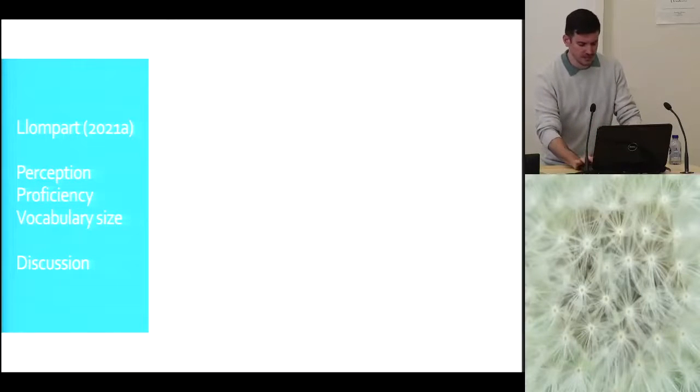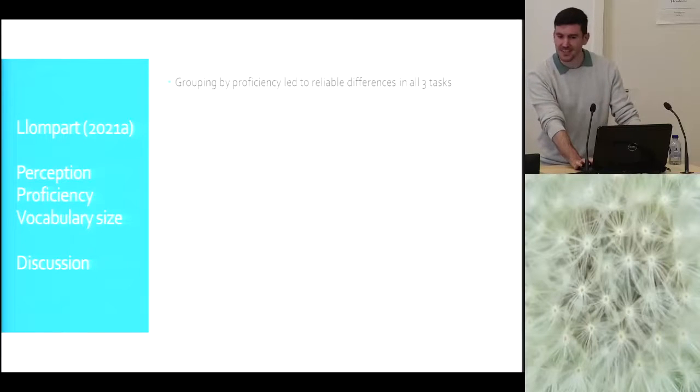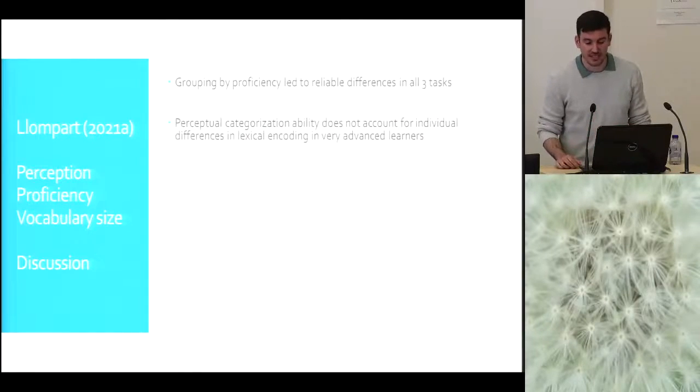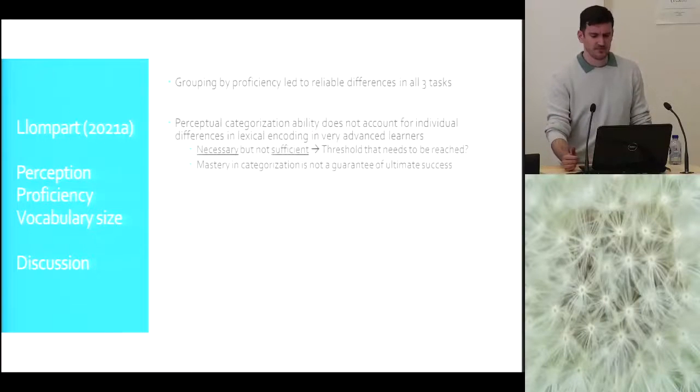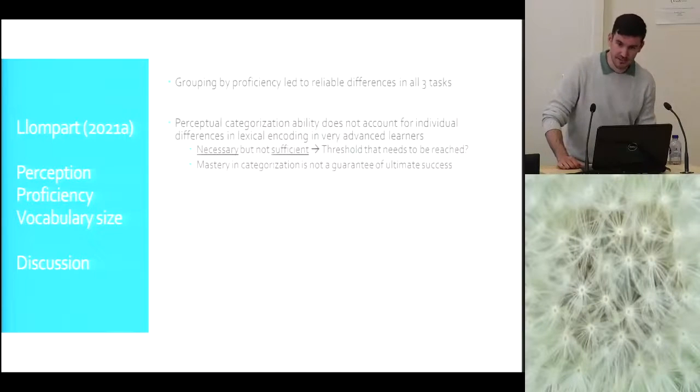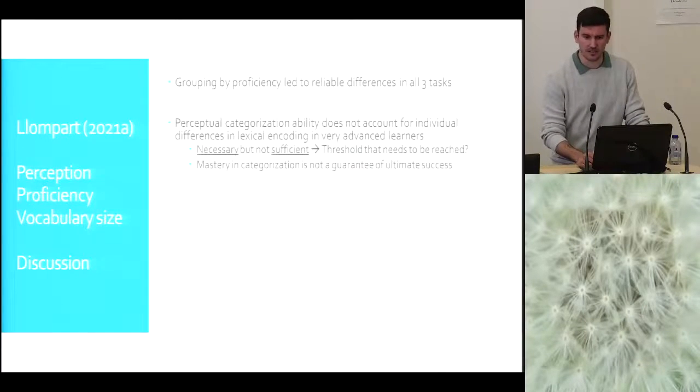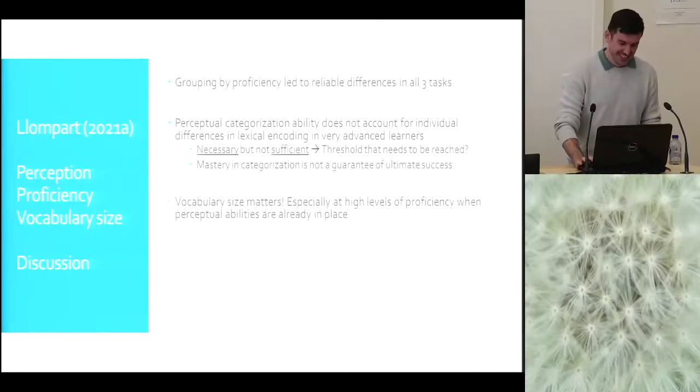Let's discuss this. What does this mean? First of all, the grouping led to reliable differences. That's good. And then this suggests that perceptual categorization ability does not account for individual differences in lexical encoding in very advanced learners. To me this suggests that perception seems to be necessary, but not sufficient. What I propose in that paper is that perception works more as a threshold that needs to be reached in a kind of good enough perception way. And that then, other differences in category sharpness do not matter after a certain point. Or, said in a different way also, that mastering categorization is not a guarantee of success in lexical encoding. Which I think is something that Isabel just said in her talk before. We seem very much alike.